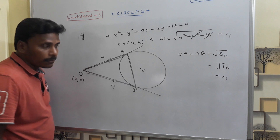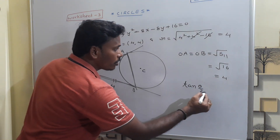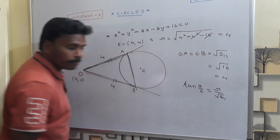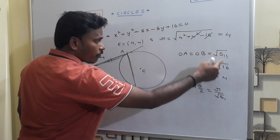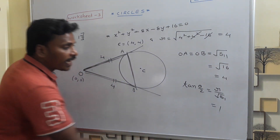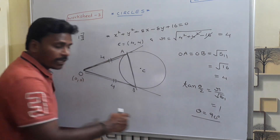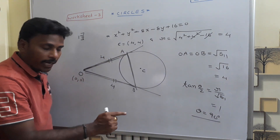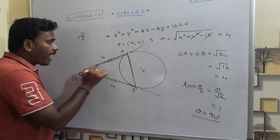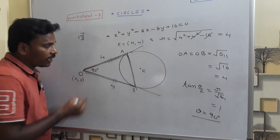Next, we find the angle between the pair of tangents using the formula: tan(θ/2) = R / √S₁₁. R = 4 and √S₁₁ = 4, so tan(θ/2) = 1, meaning θ/2 = 45°, and therefore θ = 90°. The angle AOB in triangle OAB is 90 degrees.